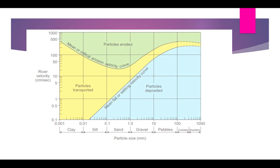On the Y-axis we have flow velocity or river velocity in centimeters per second. On the X-axis we have particle size from 0.001 to 1000, and based on that we have particular regions of different sediments: clay, silt, sand, gravel, pebble, cobble, and boulders.